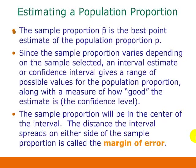When estimating a population proportion, the sample proportion P-hat is the best point estimate of the population proportion P. But since the sample proportion varies depending on the sample selected, an interval estimate or confidence interval gives a range of possible values for the population proportion, along with a measure of how good the estimate is — the confidence level. The sample proportion will be in the center of the interval, and the distance the interval spreads on either side of the sample proportion is called the margin of error.